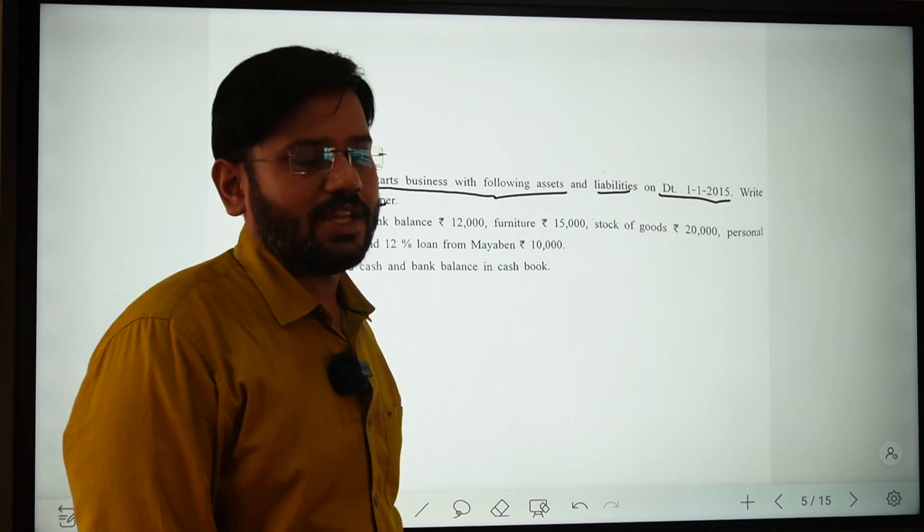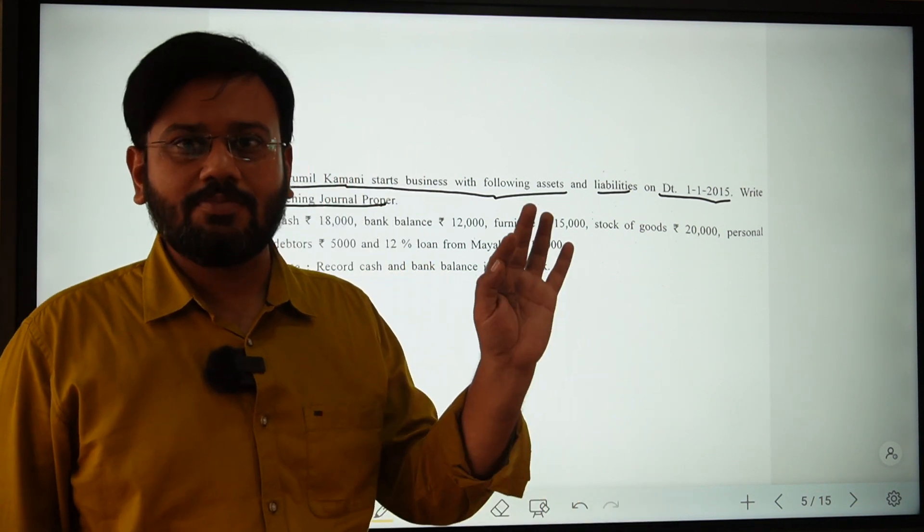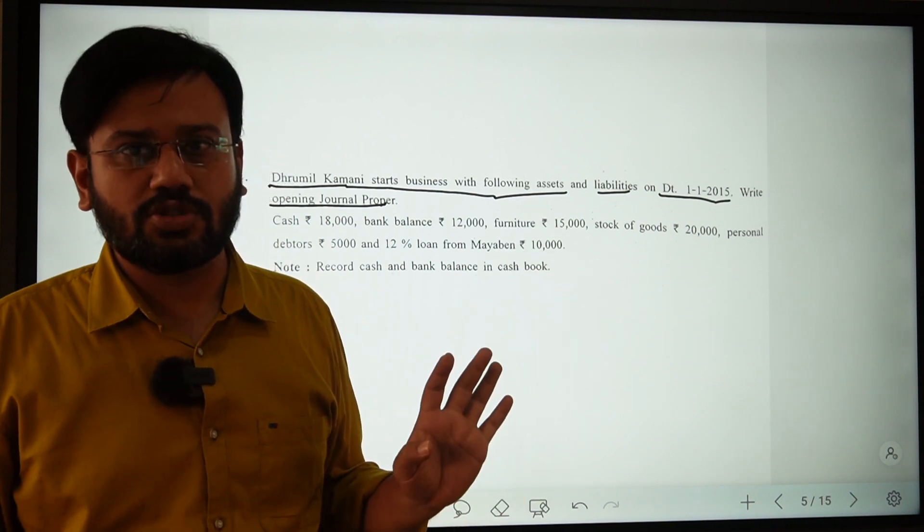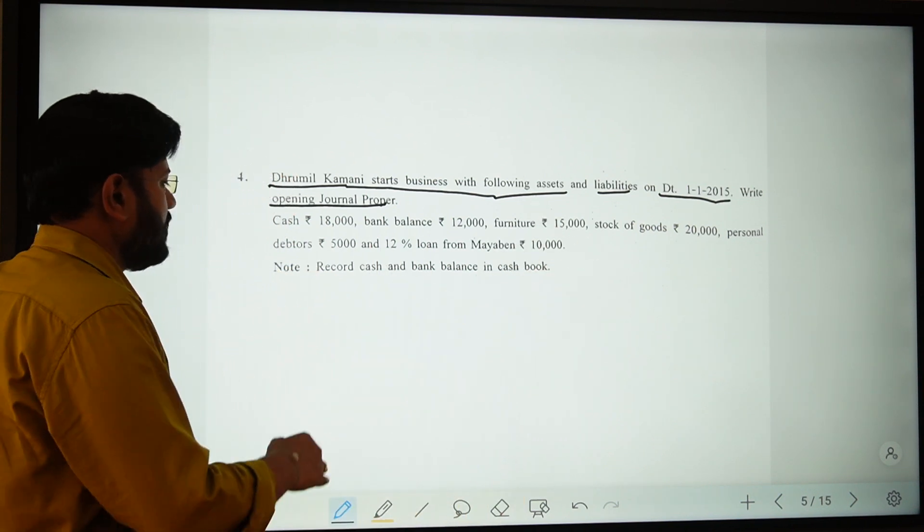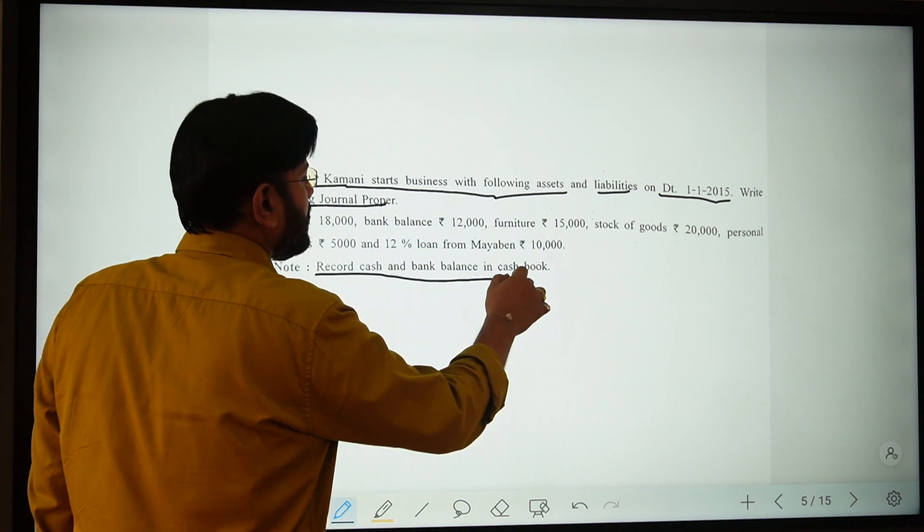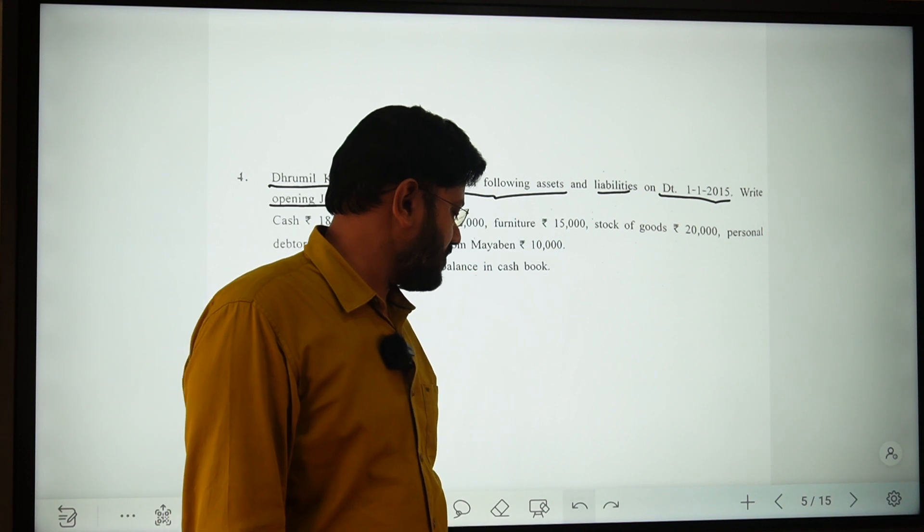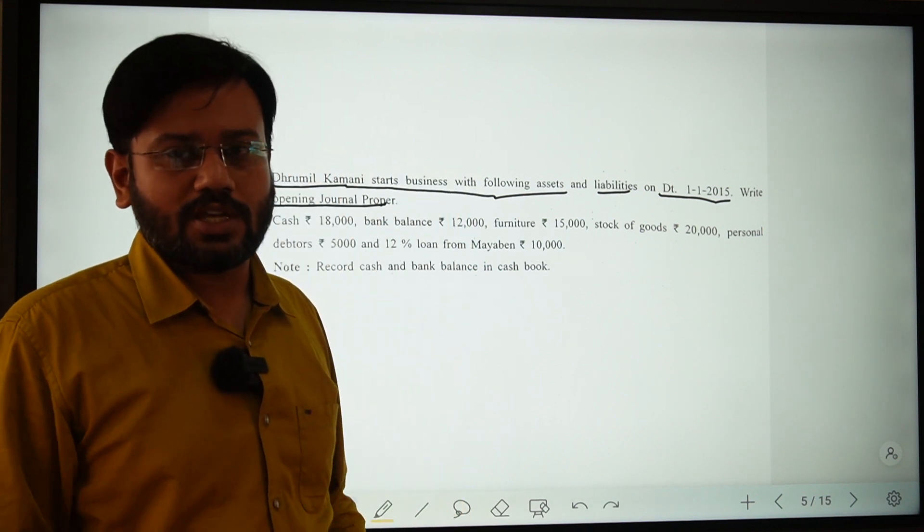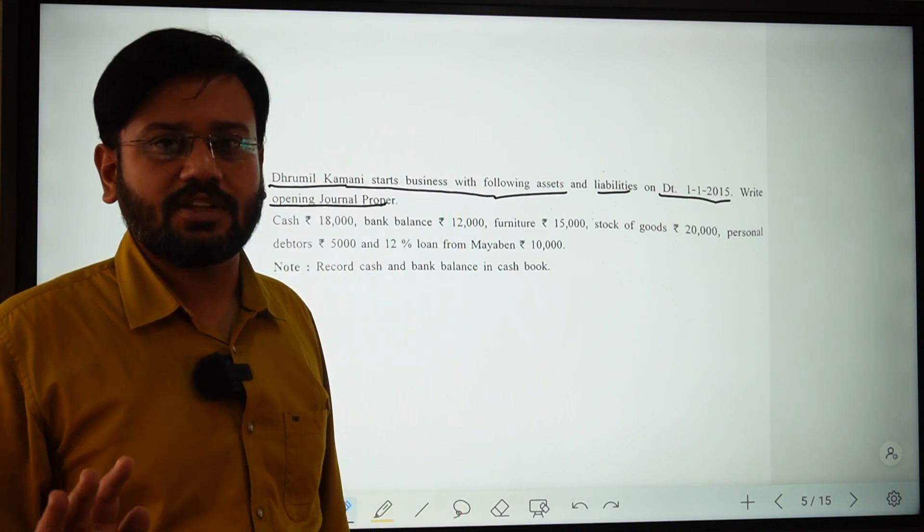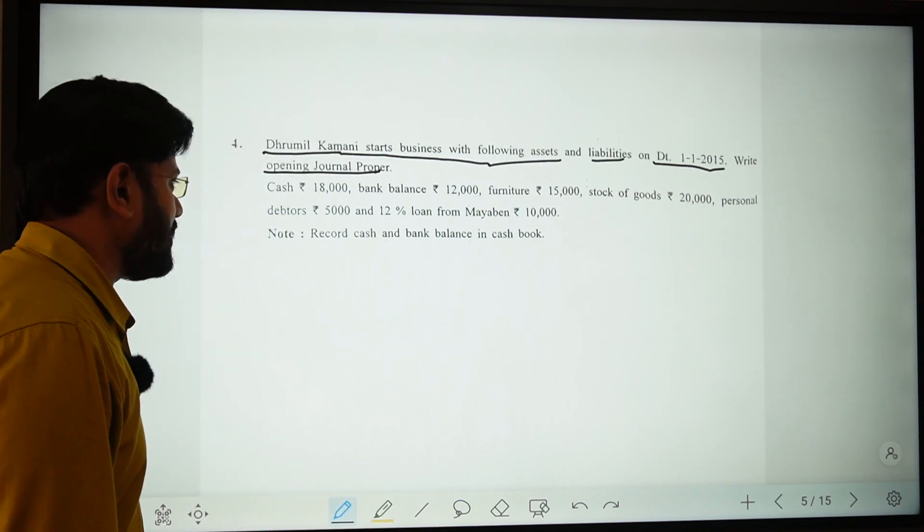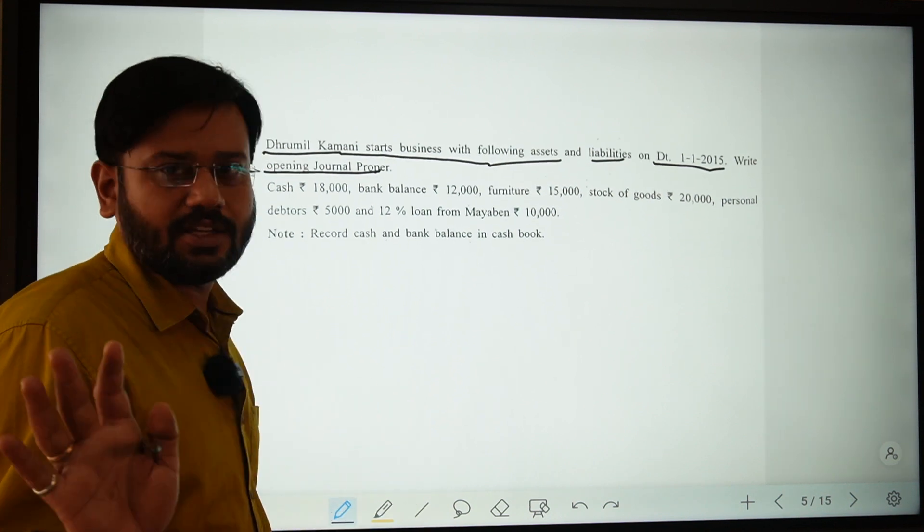In the journal proper, we have to keep in mind that cash balance, bank balance, and cash transactions are not written here. Record the cash and bank in the cash book. This is a general journal. We maintain both the journal book and the cash book. Now let's read the assets and liabilities.